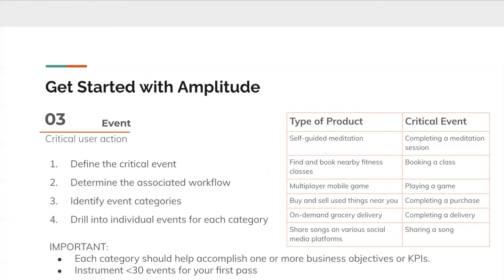Determine the workflow leading up to that critical event and factors that cause users to enter the flow. Next, identify the broad categories of your events to help you conceptualize the major components of your product. Event categories could be registration, onboarding, checkout. Each category tracked should help towards accomplishing at least one or more of your business objectives or KPIs. Once you've determined your overarching categories, drill down into individual events of these groupings. Begin with the top priority event, then align with your business goals and KPIs. It is recommended that you have no more than 30 events for your first pass.